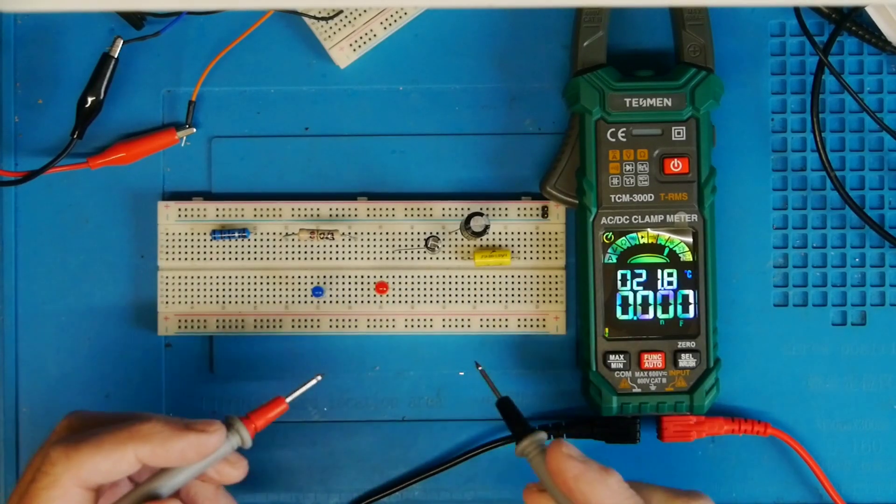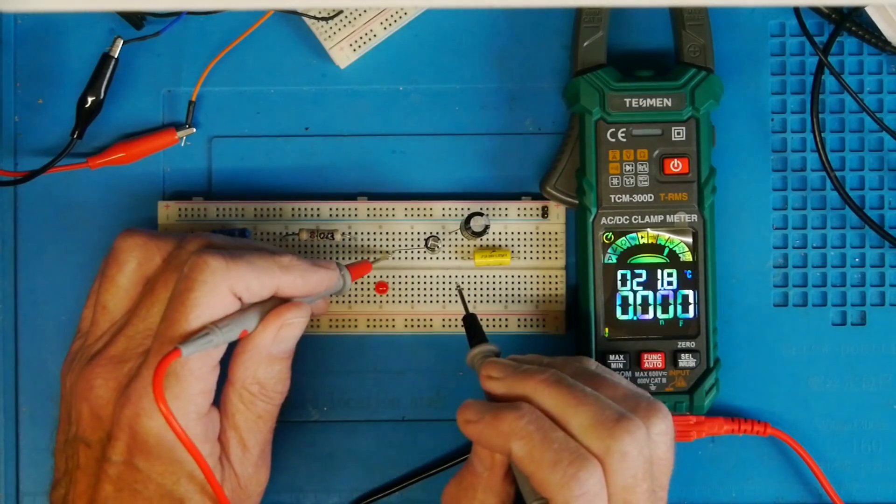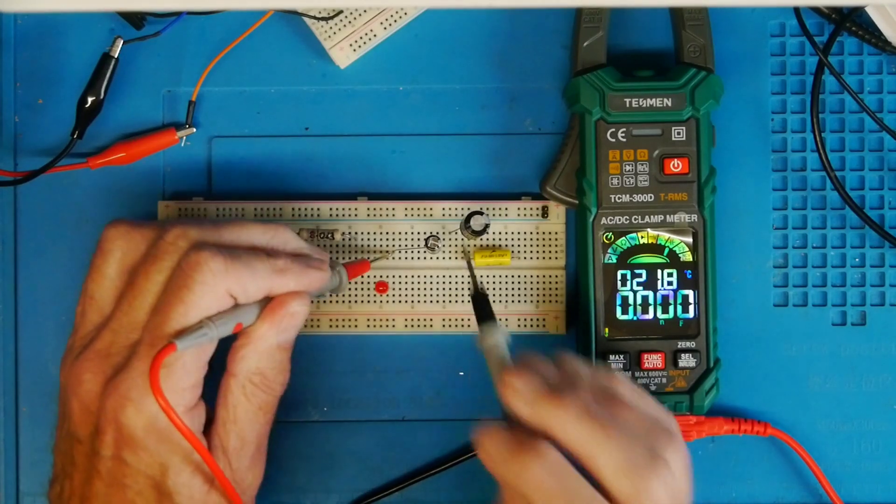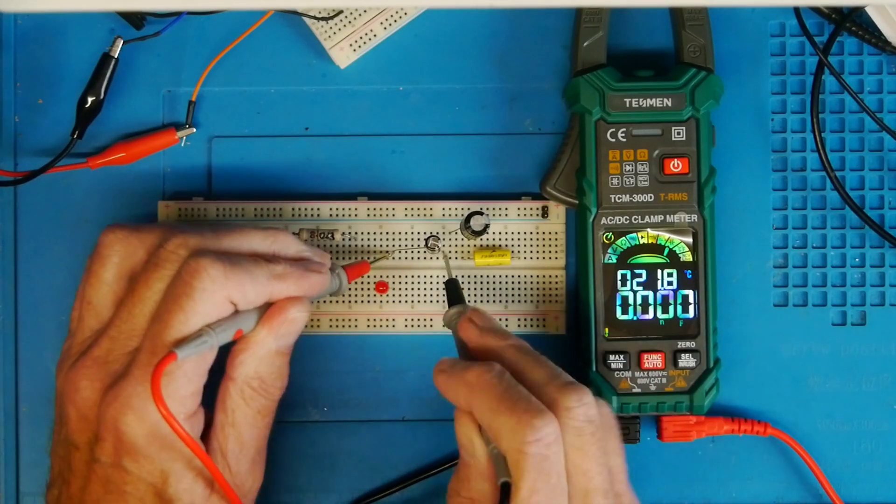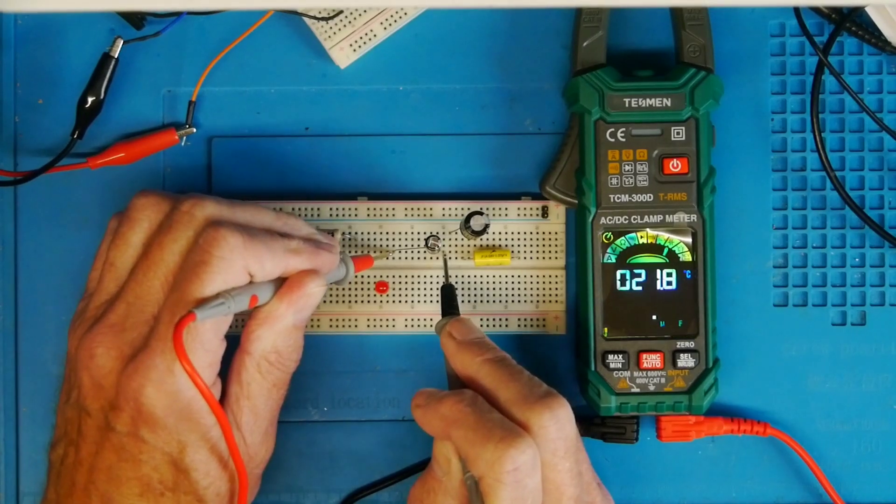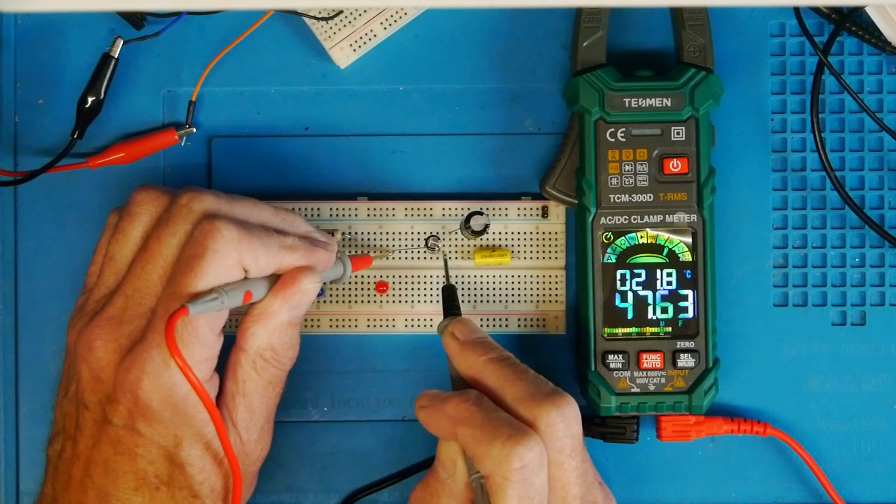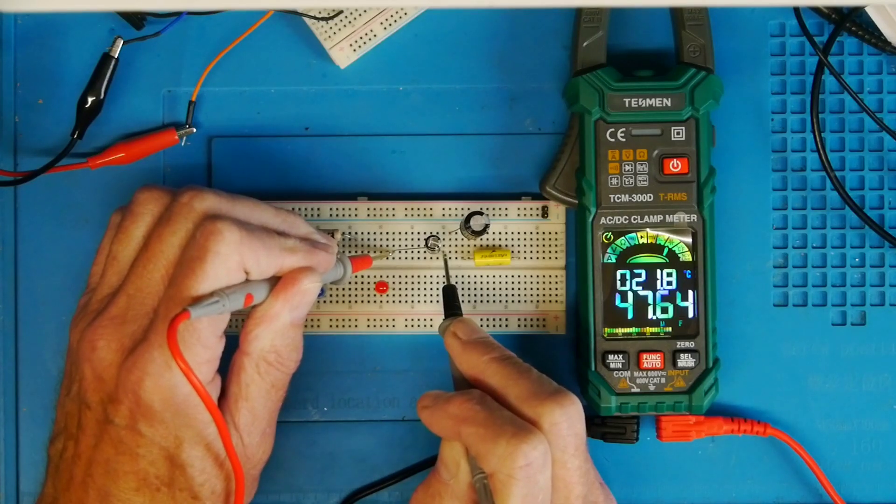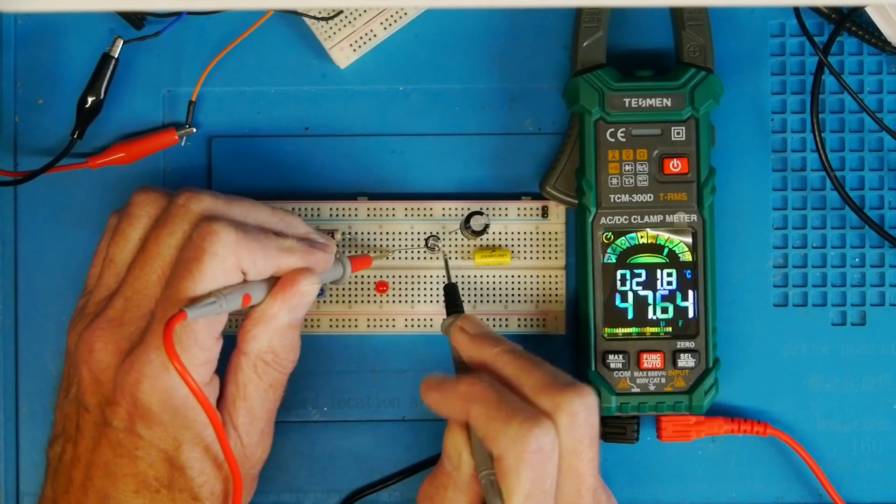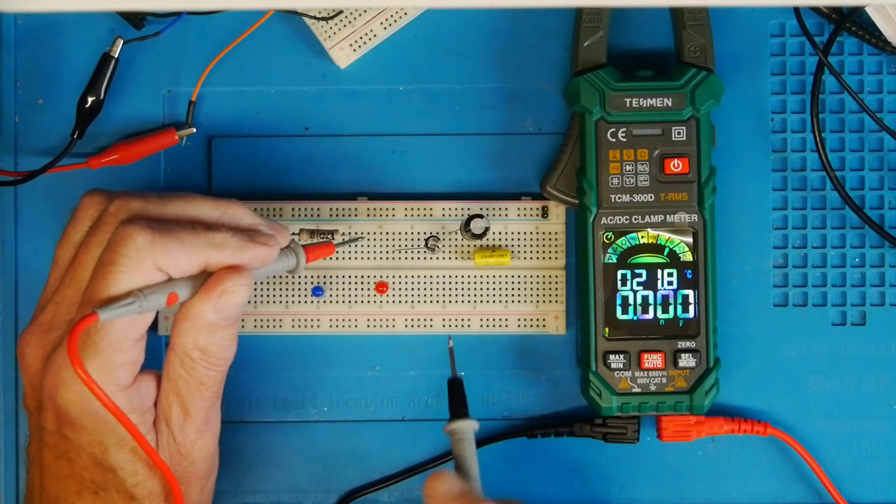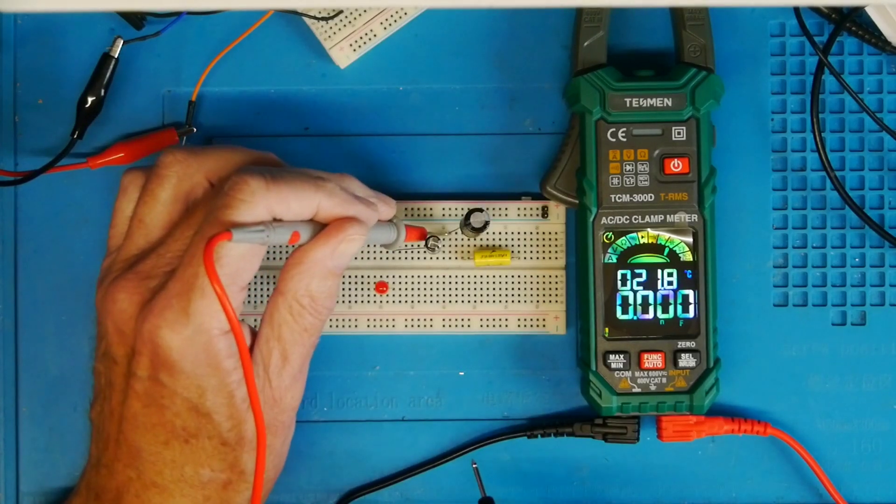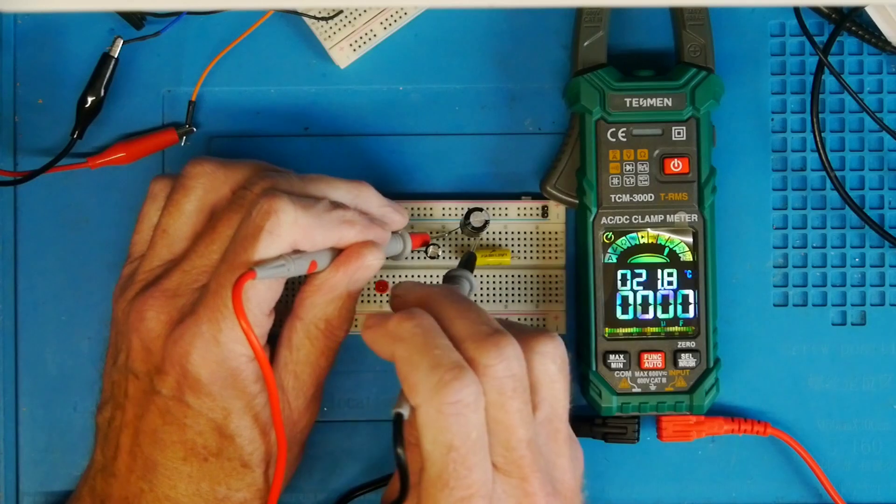I've got a couple of larger value electrolytics. This is why I wanted to swap the leads around - these are polarized. This one's right in the middle of the range you'd expect. It takes a moment to get there. This is a 47 microfarad and it's getting 47.6 there.